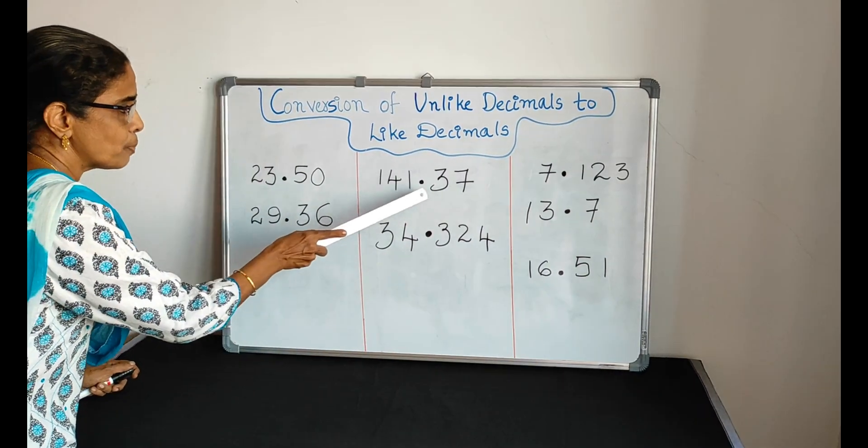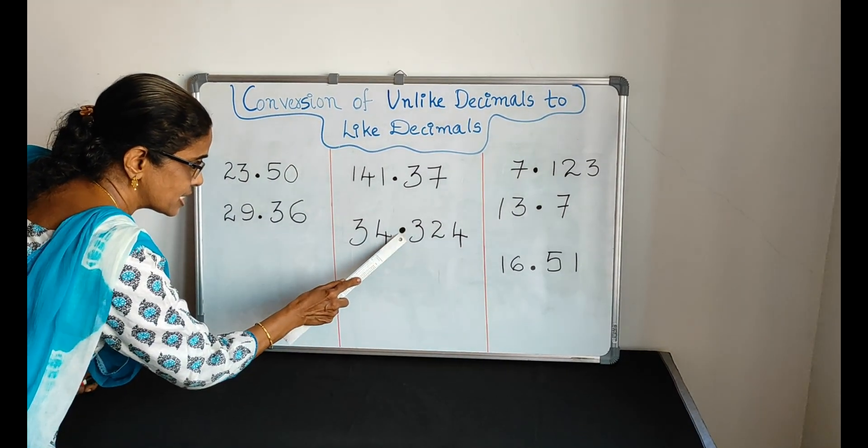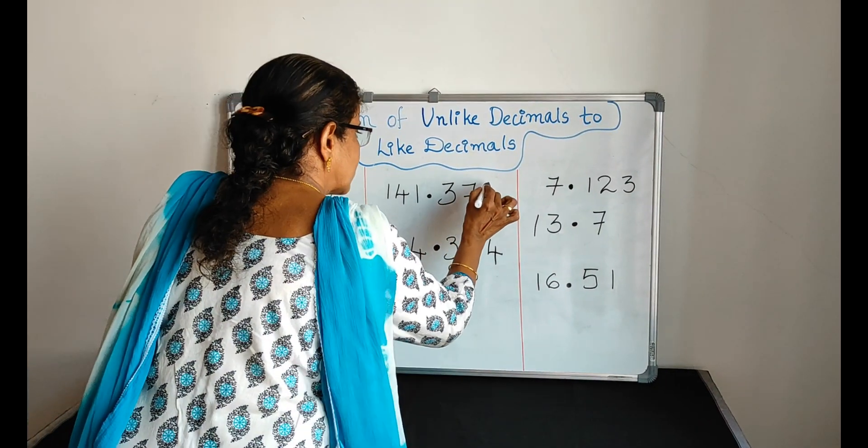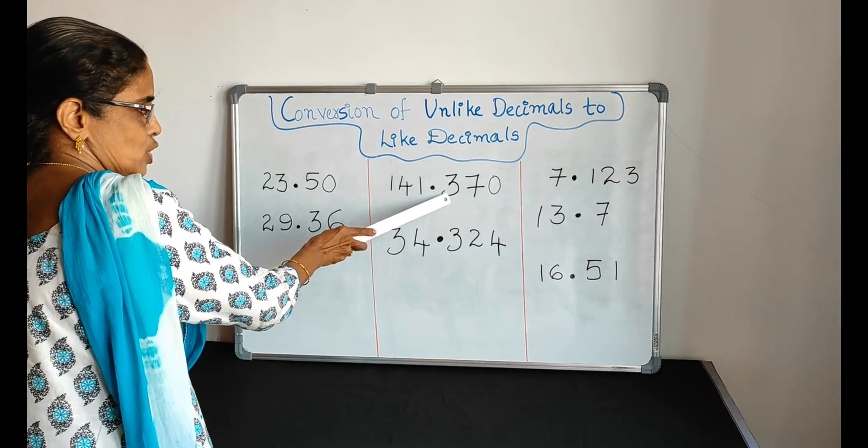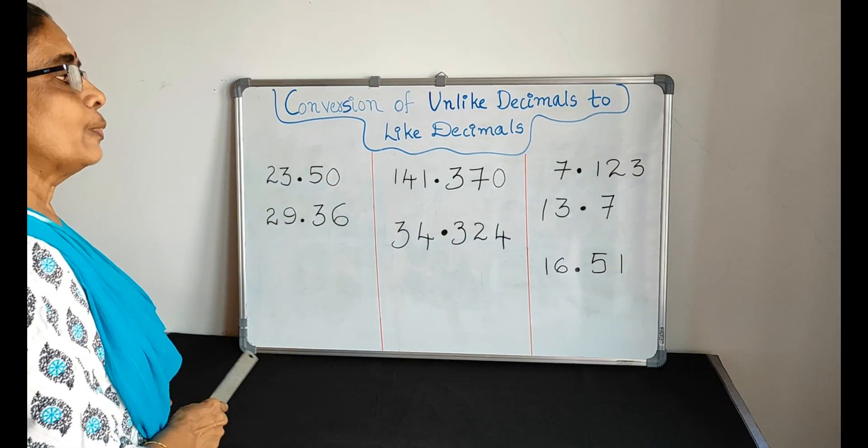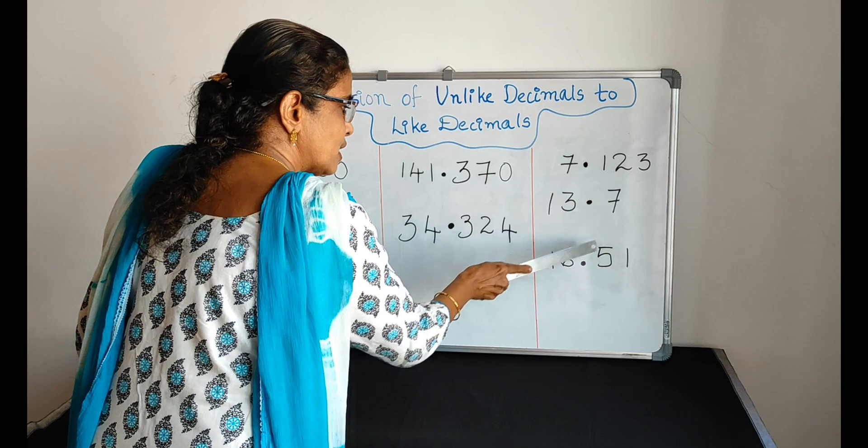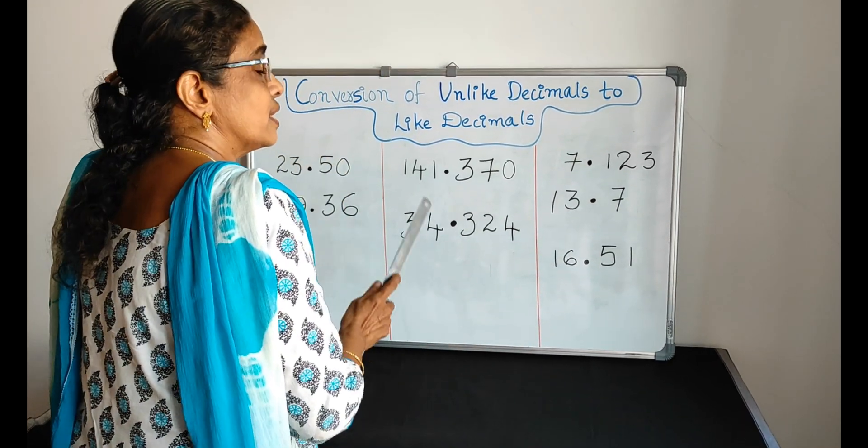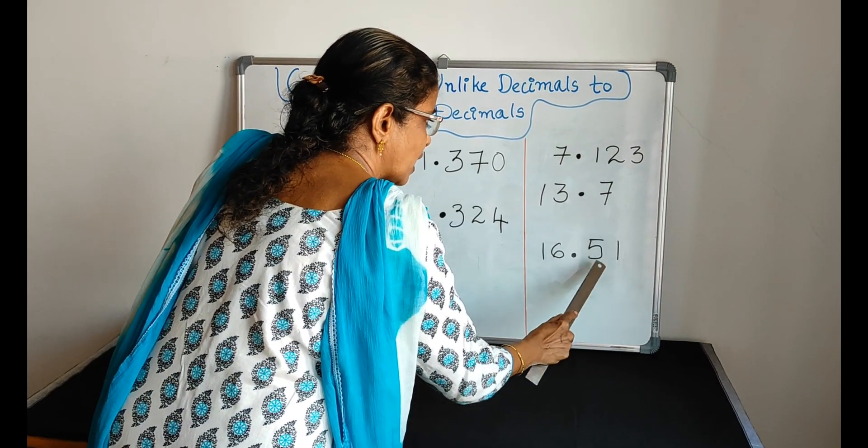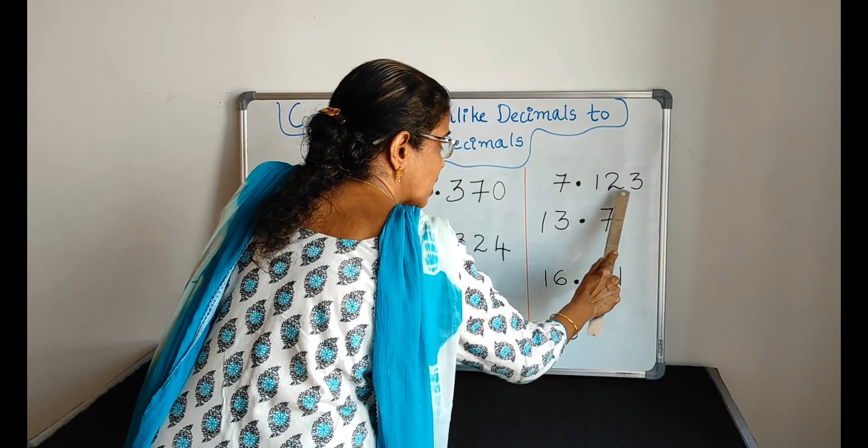Here we have 141.37 and 34.324, which has three digits after the decimal point. For the other numbers, here we have one digit and here we have two. You have to make them all three digits. The maximum we have is three digits.